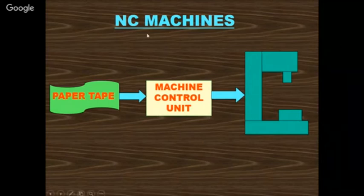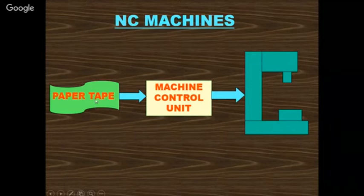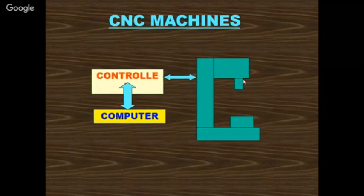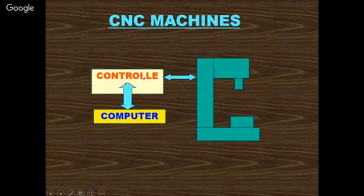Looking back about four to five decades, we were using paper tape fed to the MCU (Machine Control Unit), which transferred data to the NC machine — either turning or milling machine. Then CNC machines were developed with computers and controllers: the computer gives data to the controller, and the controller gives data to the CNC machine — either CNC turning or milling machine according to the design concept.